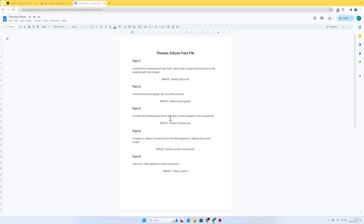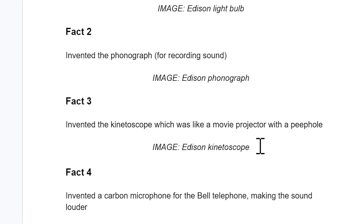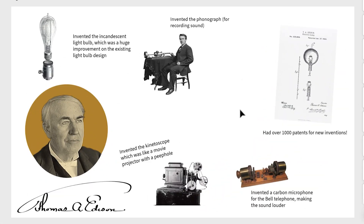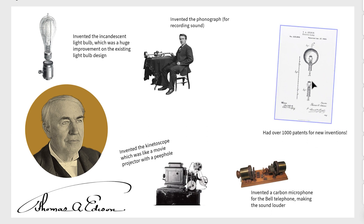I'm going to go through and do my next three images and add them onto my page. There we go — I've got my five facts with accompanying images and a picture of Thomas Edison himself. Here's an interesting fact: he had over a thousand patents for new inventions. A patent is basically when you copyright an idea — it's your idea and no one else can copy it. This here is his patent for his famous light bulb.